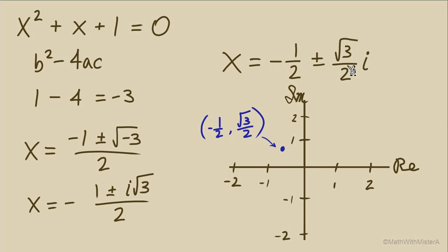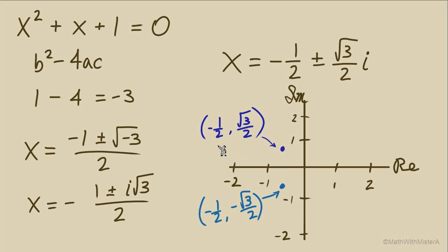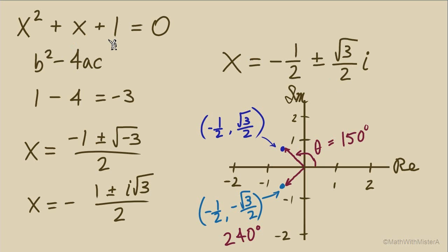Our other solution, negative 1 half minus radical 3 over 2i, has the same horizontal component negative 1 half, but the vertical is now negative from the negative radical 3 over 2. We see these two points are reflections about the horizontal axis. These ordered pairs are also familiar as points on the unit circle. The point in quadrant 2 is at 150 degrees, and the point in quadrant 3 is at 240 degrees. So this pair of complex solutions to the quadratic, when plotted as points, lets us incorporate our trigonometry knowledge when working with complex numbers.